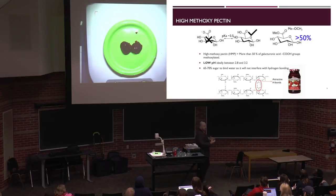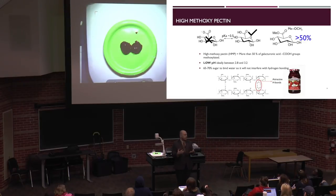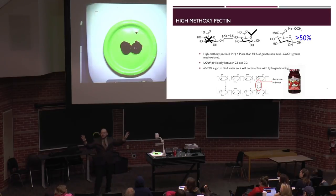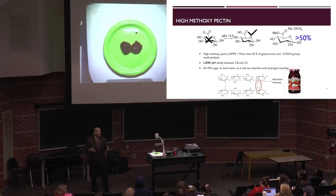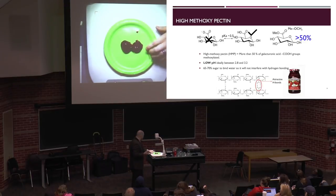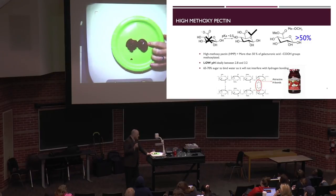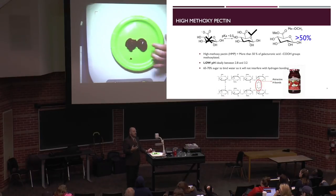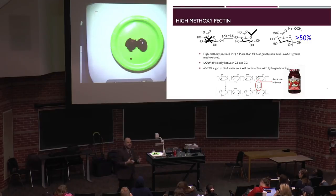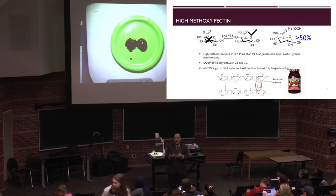Even without electrostatic repulsion, the pectin in solution is too dilute to gel on its own—it only enhances viscosity. Without sugar, with just fruit solids, there would be so much water that the pectin would never interact with itself. That pectin-pectin interaction is what creates a self-standing gel. Think of it like building walls: if the walls aren't interconnected, the roof falls. In a polymer gel, each polymer represents a wall, and the contact points are the glue holding everything together.